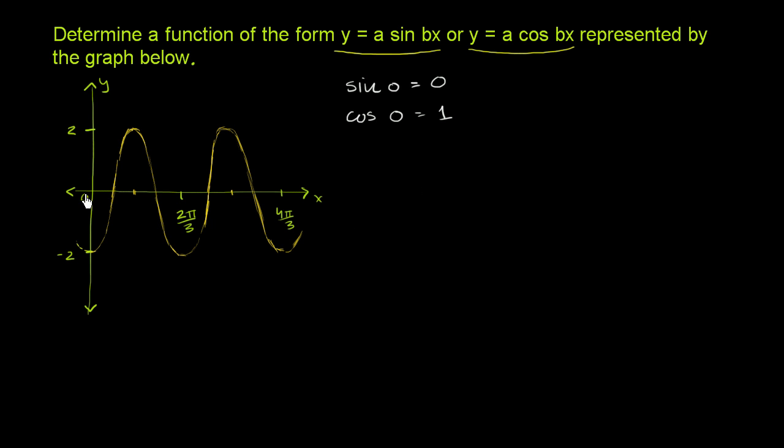So it would be very hard, and especially in this form, it would be impossible if sine of 0 is 0 to multiply 0 by something to get to negative 2. So it can't be a sine function of this form.